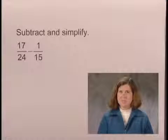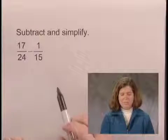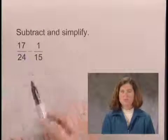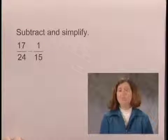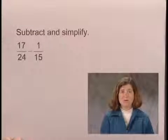Before we can subtract, we must have a common denominator. The denominators in these fractions are 24 and 15, so we need to find the least common multiple of 24 and 15 in order to rewrite the fractions with a common denominator.